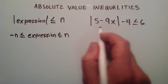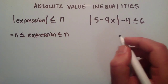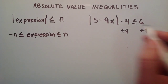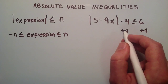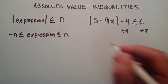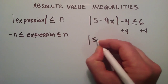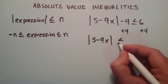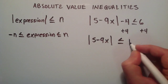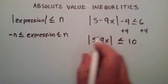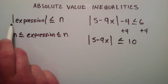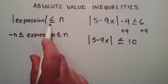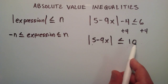We need to get our absolute value inequality into this form, so we're simply going to add 4 to each side of the inequality. A negative 4 and a positive 4 give us 0, so that just leaves us with the absolute value part. So we've got absolute value of 5 minus 9x, and that's less than or equal to 6 plus 4, which gives us 10. Now we have our absolute value inequality in the correct form: the absolute value of the expression 5 minus 9x is less than or equal to n, which in our case is 10.